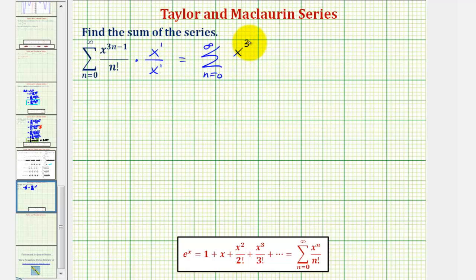and here we'd have x times n factorial. Well from here, we could factor out 1 over x,